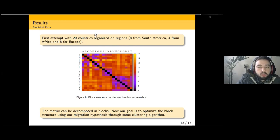We expect that if this matrix has some kind of block structure, then there would be some synchronization between particular countries, not all, but between some particular countries. This is our first attempt to build this matrix. I tried to previously group the countries by region: the first eight countries are from South America, the middle four are from Africa, and the last eight countries are from Europe. We can clearly see that there is a block structure that can be built.